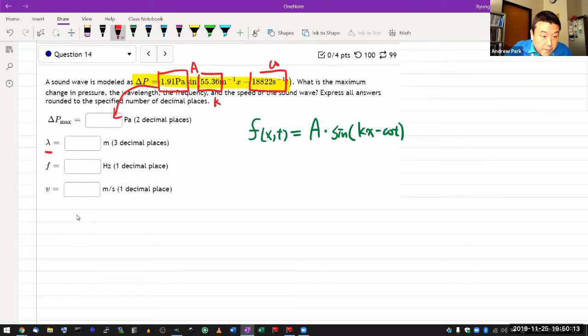For the wavelength, you need to remember the relationship between wave number and wavelength. Wave number is 2π divided by the wavelength. So solve that for wavelength, plug in k that you find here, then you're done.